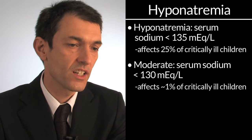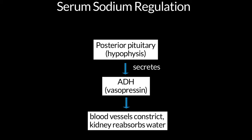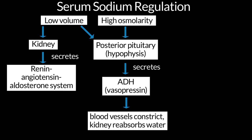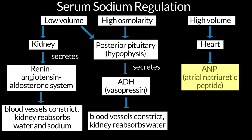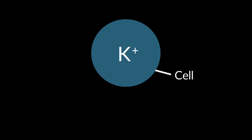Serum sodium is strictly regulated by interplaying mechanisms. The first is the increase of vasopressin, which is created by the posterior hypophysis in response to stimuli like a reduction in circulating volume or an increase in plasma osmolarity. The renin-angiotensin-aldosterone system enhances reabsorption of sodium and water in case of hypovolemia. The sympathetic nervous system has similar effects. Atrial natriuretic peptide has opposite effects. The main intracellular ion is potassium, while the main extracellular ion is sodium, and urea moves freely across the cell membrane.